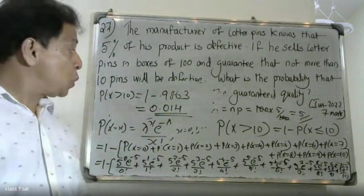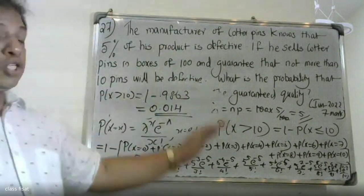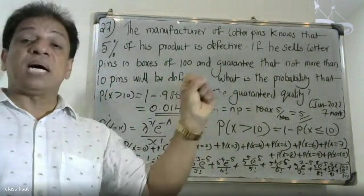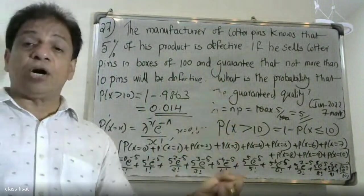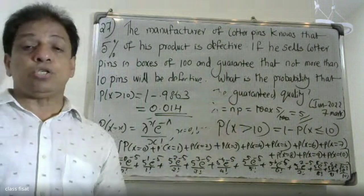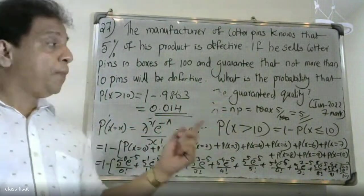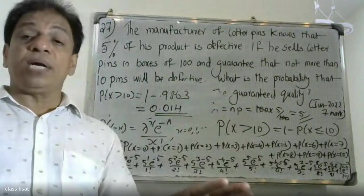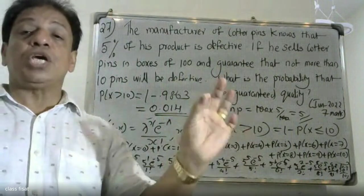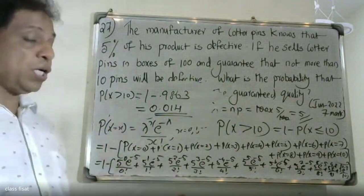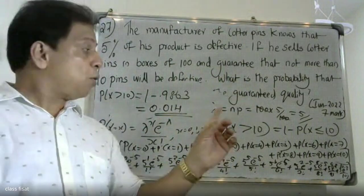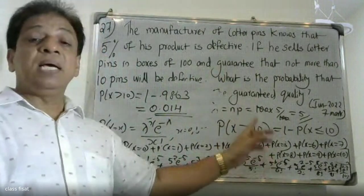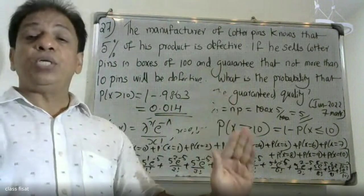So the final value is approximately 0.0137. Recapping: the problem has n equals 100, defect rate of 5% giving lambda equals 5 for the Poisson distribution. The probability that the box fails to meet guaranteed quality, i.e., P(X > 10), equals 1 minus P(X ≤ 10), which gives approximately 0.0137.